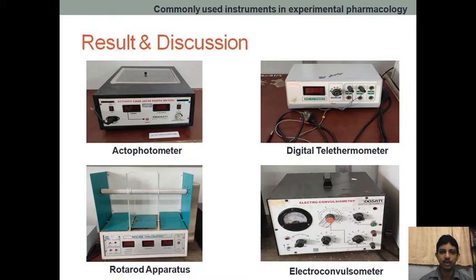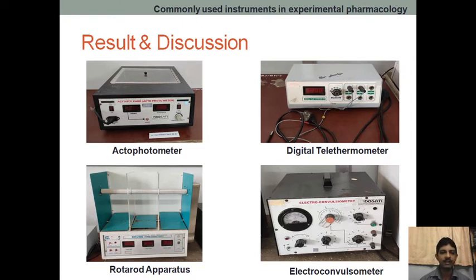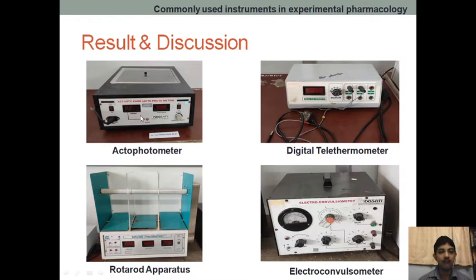We keep the animal and check it for 5 minutes and 10 minutes. We first record the control without drug, and then check the responses with the drug. If the number is increasing, it means the drug produces CNS stimulatory activity, so movement is increasing. But if the count is decreasing, it means CNS depressant activity, so movement is less.